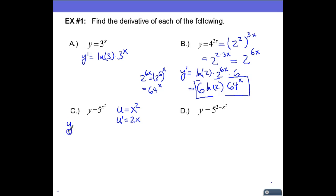So now we have y prime is equal to the natural log of five times our original function, five to the x squared. And I need to multiply by du dx or u prime, so that's going to be 2x.